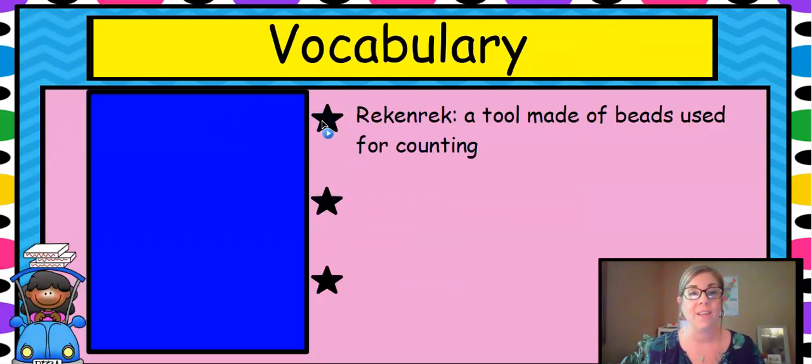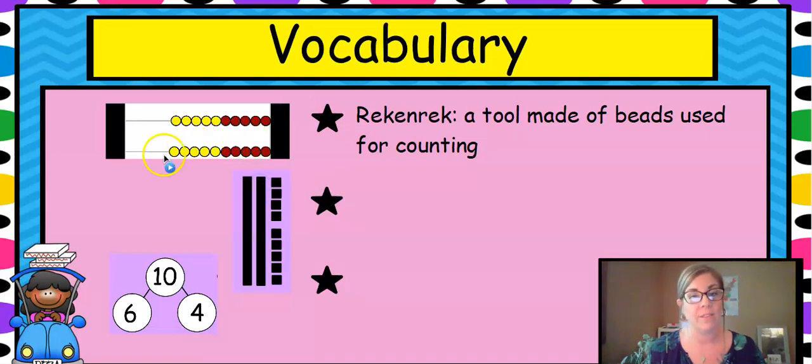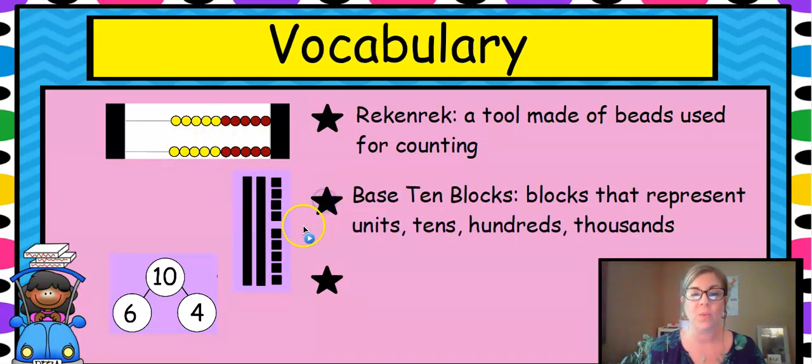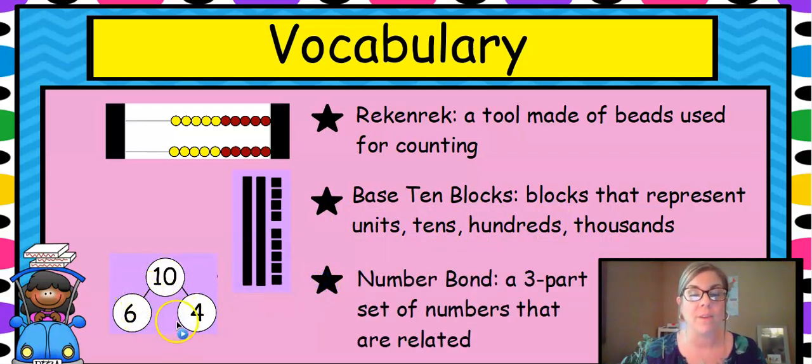Our vocabulary is a rekenrek, the tool used for counting. We have our base 10 blocks, the blocks that represent units, tens, hundreds, and thousands even. And we have our number bond, a three-part set of numbers that are related.